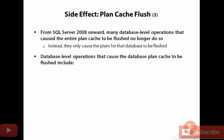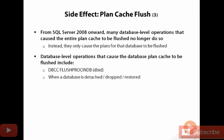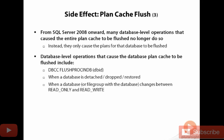The database-level operations that cause the database plan cache to be flushed include things like DBCC FREEPROCCACHE — you pass in the database ID to use this. When you detach, drop, or restore a database, those all make sense. If you detach a database or drop a database, the plan cache would have to be evicted. But I think it's very interesting that if you change a database from read-only to read-write, or change a file group within the database to read-only or read-write, then the entire database's plan cache is cleared.